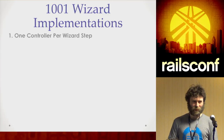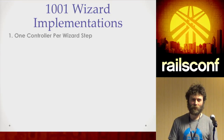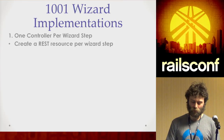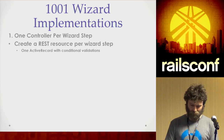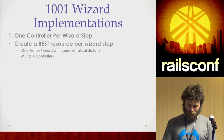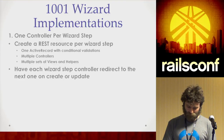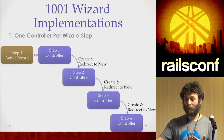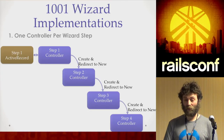One approach I've seen on actual code bases was one controller per wizard step. You create a REST resource per wizard step. You have multiple controllers, multiple sets of views and helpers, and each controller redirects to the next one. You could do it either with one ActiveRecord that has conditional validations for each step — if step one, validate presence of name; if step two, validate presence of blah blah — or you could have multiple ActiveRecords.